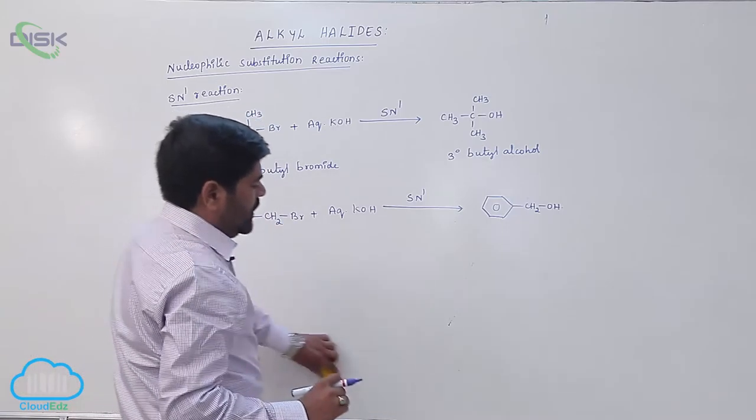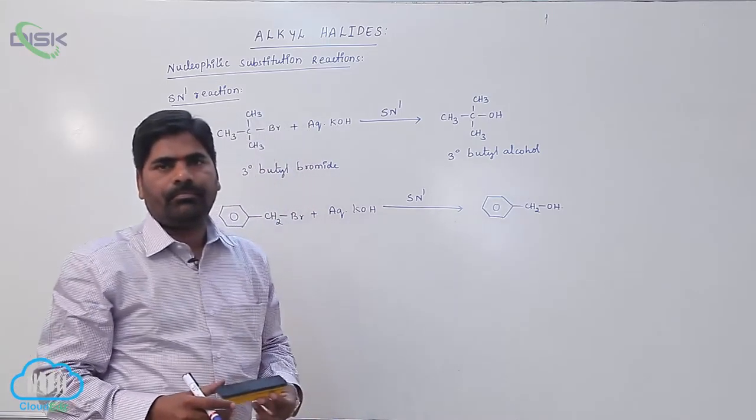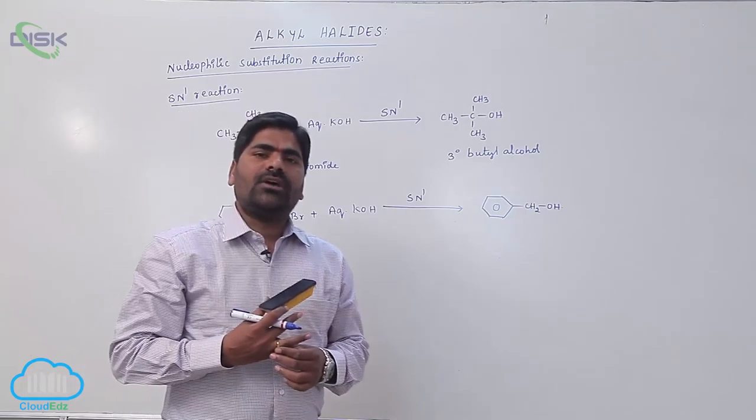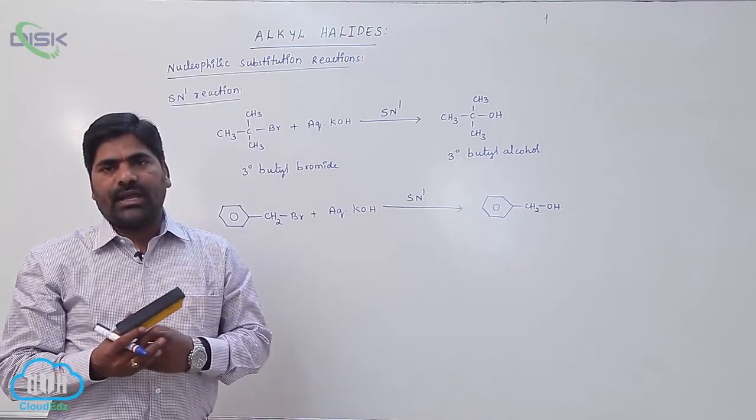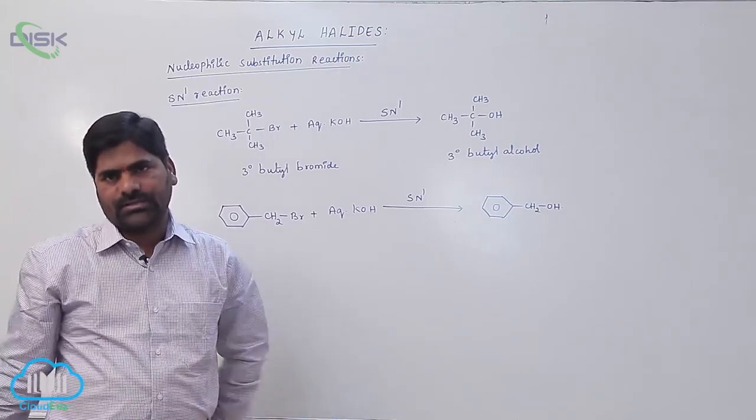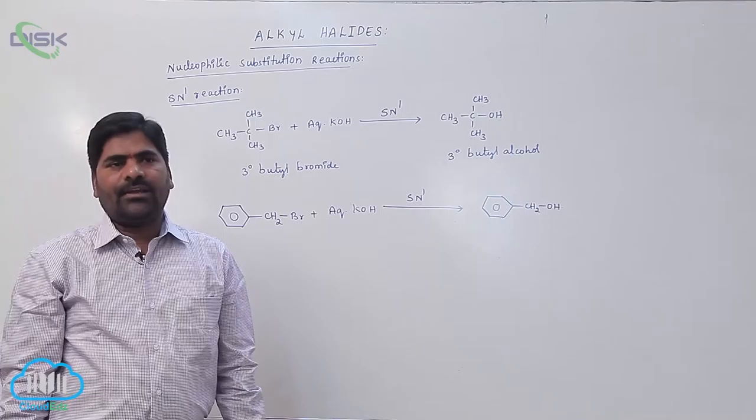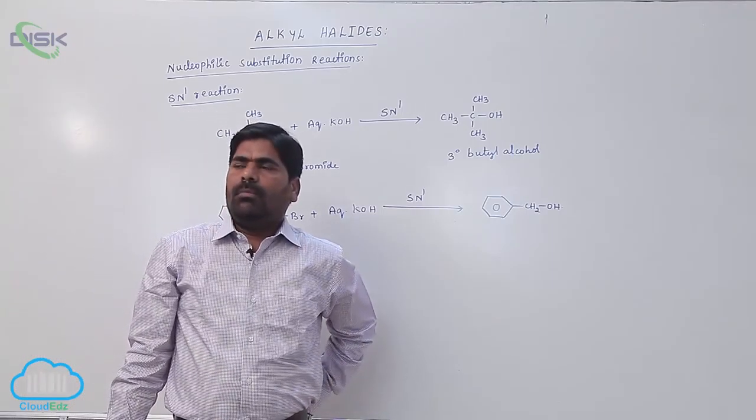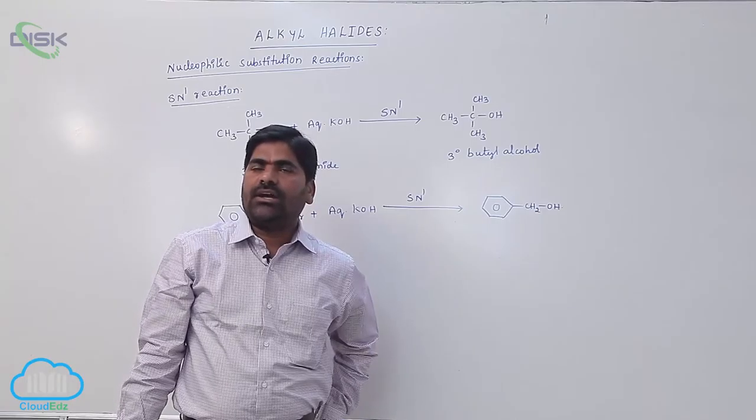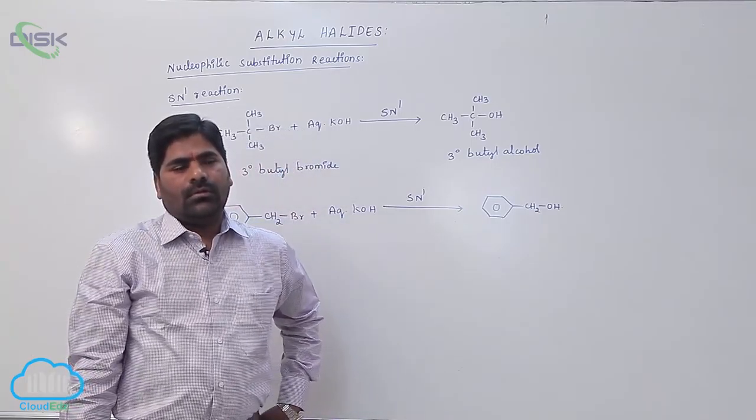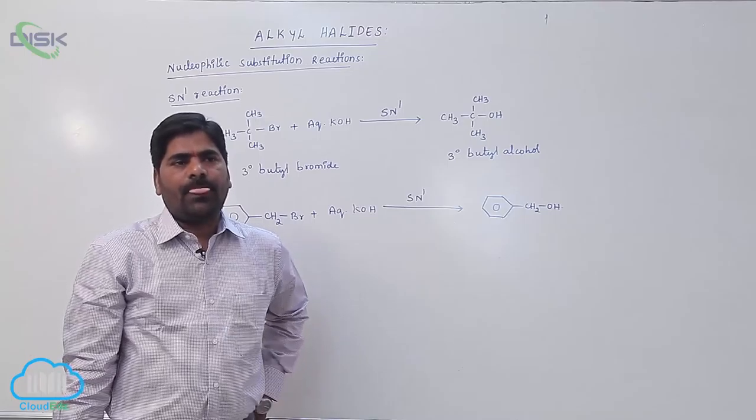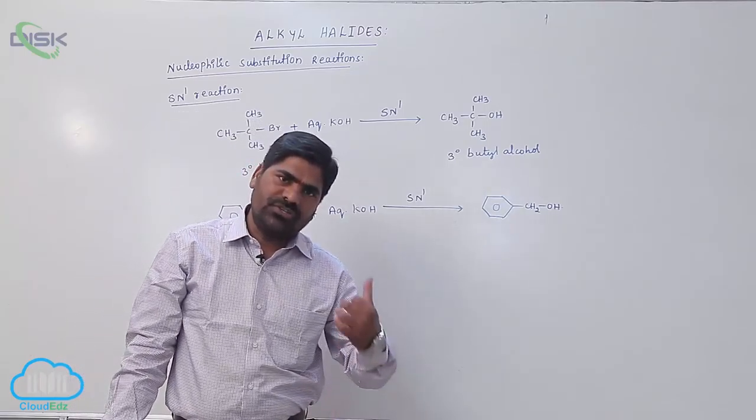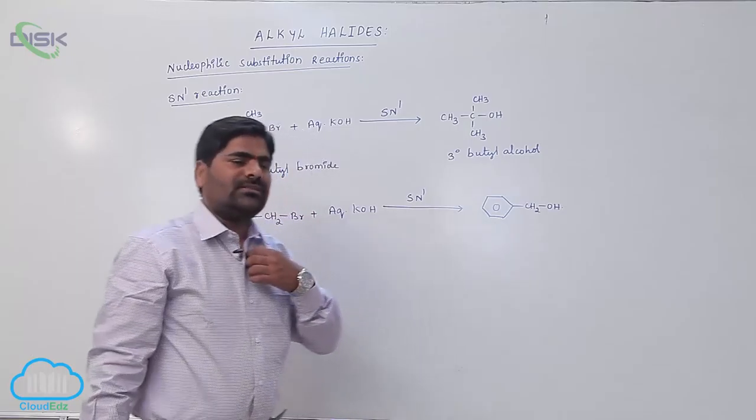Now in SN1 mechanism, tertiary butyl halides are more reactive when compared to secondary and primary alkyl halides. The reason is in tertiary alkyl halides, bulkier alkyl groups are attached. Therefore, in order to get stability, tertiary alkyl halides are more reactive towards nucleophilic substitution reactions.